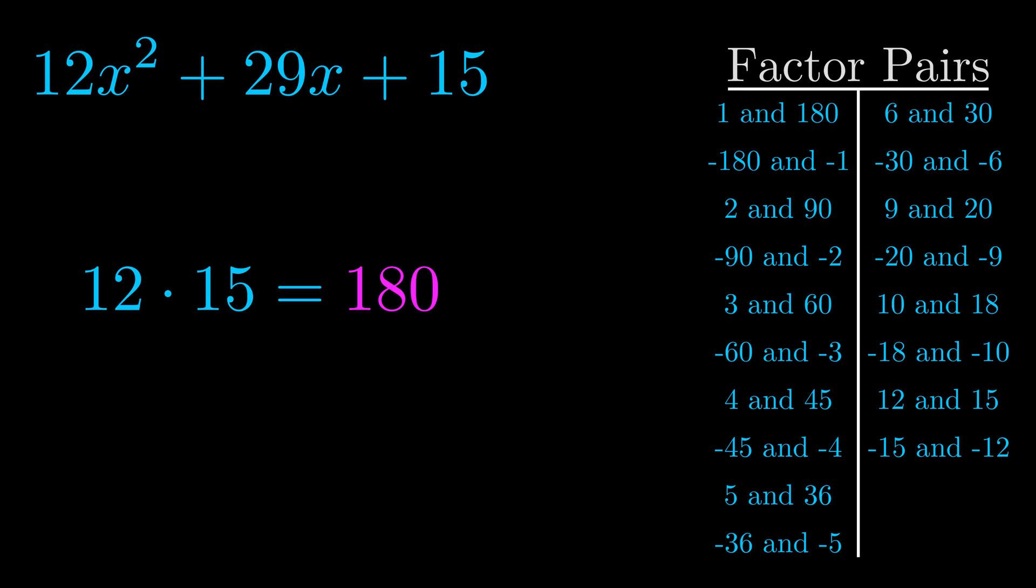The b value is the coefficient on the x term. That's the middle term, the one that we haven't done anything with yet. And really this is the only factor pair that we need.